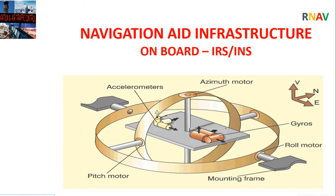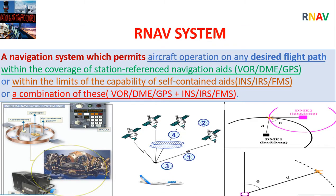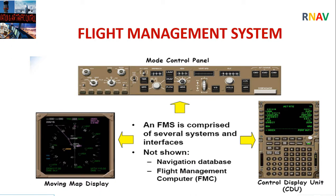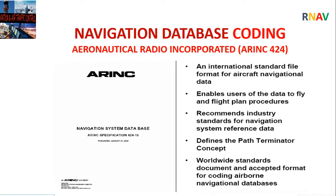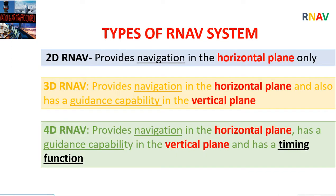Area navigation is a navigation system that permits aircraft operation on any desired flight path within the coverage of station-referenced navigation aids, within the limits of self-contained aids, or a combination of these. The Flight Management System (FMS) is the aircraft's master computer, using a large database for sophisticated computations that enable the pilot to control the aircraft. The navigation database stores information on waypoints, navaids, runways, frequencies, routes, SIDs, and STARs. Navigation database coding follows an international standard file format that allows the FMS to create a continuous display of navigational data, enabling an aircraft to be flown along a specific route.